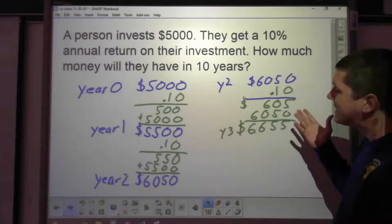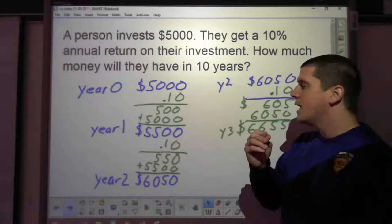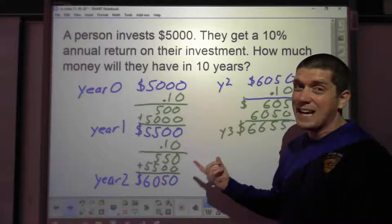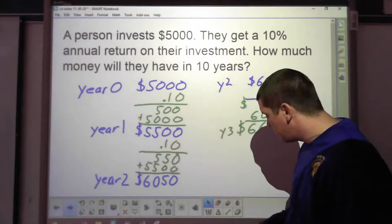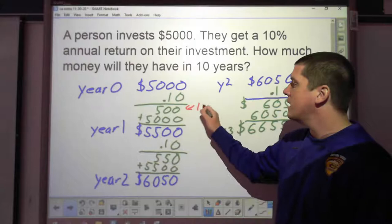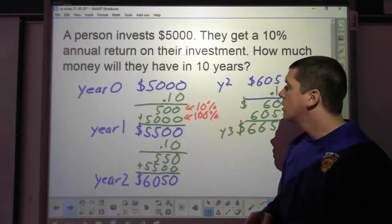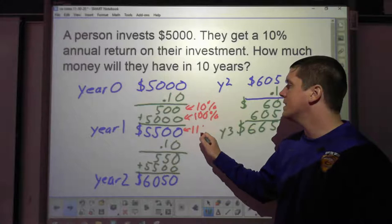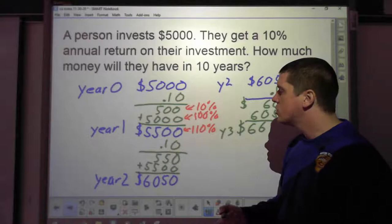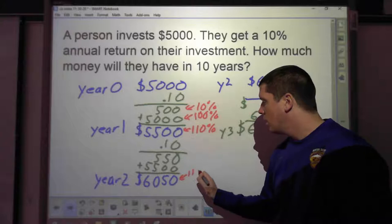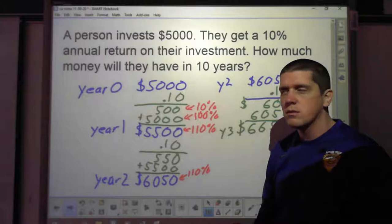And then we would need to keep going. I'm not going to do this the whole time here, but we would just need to keep going. In that year two amount, we would take that $6,050, multiply that by that 0.10. So we'll end up with $605. That's what we ended up making after that. But again, add it back to the original. And we'll end up with $6,655. That's year three. We would need to keep going and keep going and keep going each year.